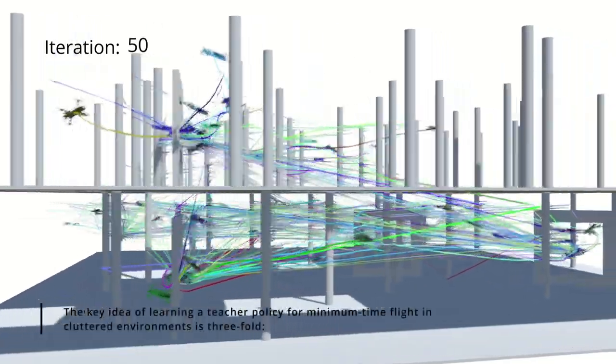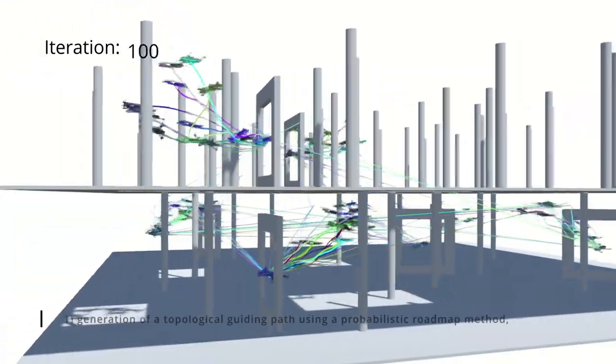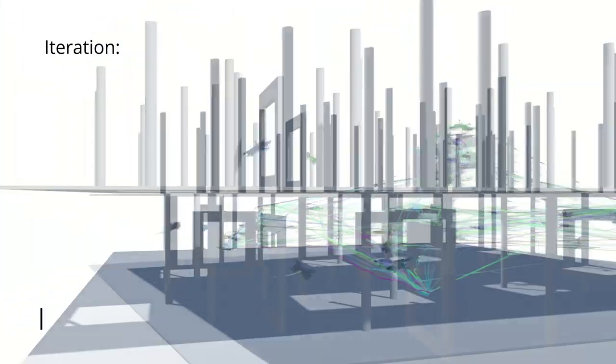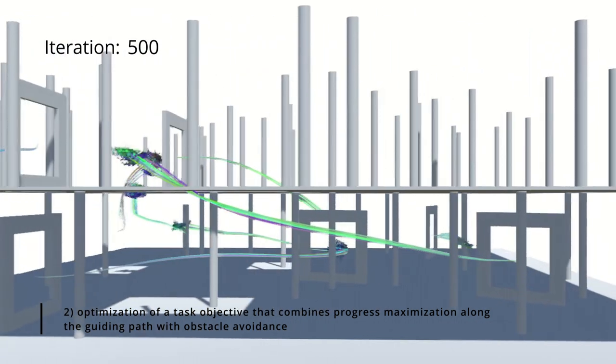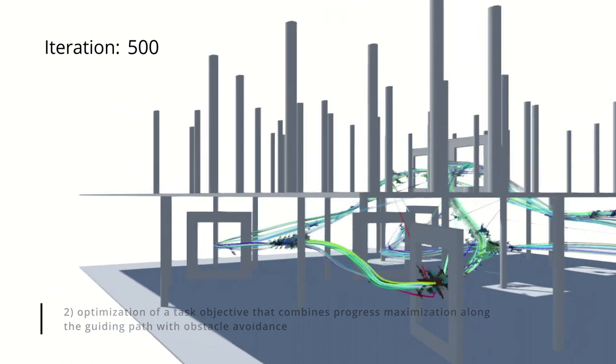The key idea of learning a teacher policy for minimum-time flight in cluttered environments is threefold. First, generation of a topological guiding path using a probabilistic roadmap method. Second, optimization of a task objective that combines progress maximization along the guiding path with obstacle avoidance.